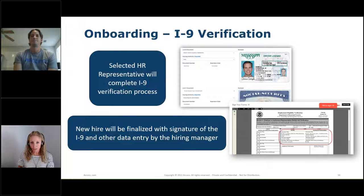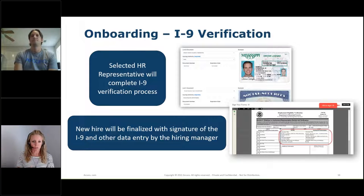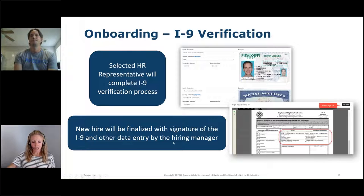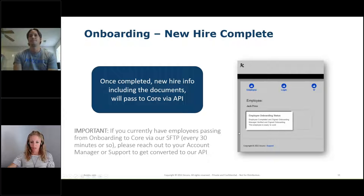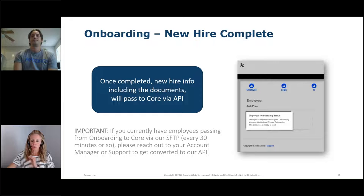Once they've completed their new hire paperwork, the next important step is the I-9 verification. Whatever representative at your organization does that verification will complete it with the driver's license, social security card, passport, or whatever documents are applicable. The new hire is finalized once the hiring manager signs off on the I-9. Upon completion, that new hire information — including all their documents — will then pass to CORE via API.